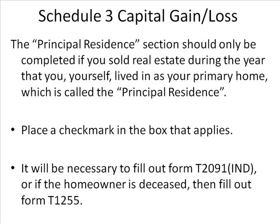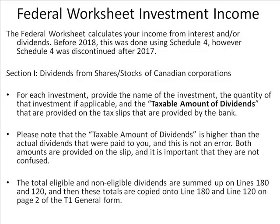The principal residence section should only be completed if you sold real estate during the year that you yourself lived in as your primary home, which is called the principal residence. Place a check mark in the box that applies. It will be necessary to fill out form T2091IND, or if the homeowner is deceased, fill out form T1255. The Federal Worksheet calculates your income from interest and/or dividends. Before 2018, this was done using Schedule IV; however, Schedule IV was discontinued after 2017.